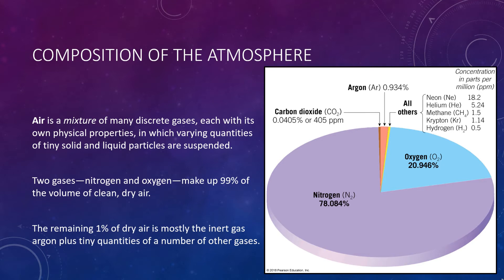Two gases, nitrogen and oxygen, make up 99% of the volume of clean, dry air. Although these gases are the most plentiful components of air and are most significant to life on Earth, they are of minor importance in affecting weather phenomena. The remaining 1% of dry air is mostly the inert gas argon, which makes up 0.93%, plus tiny quantities of a number of other gases, which you can see in the top right of the figure.